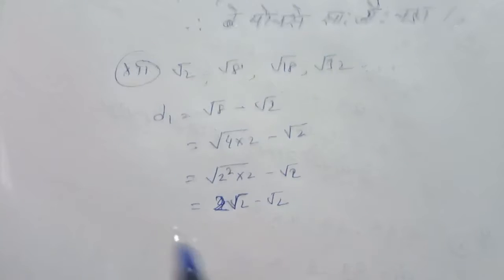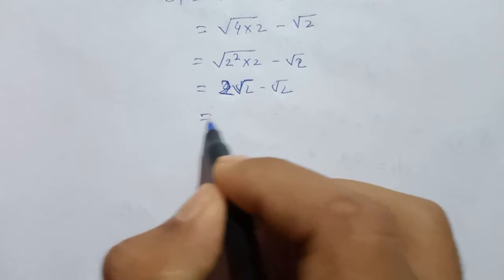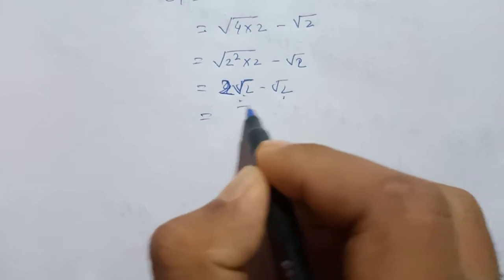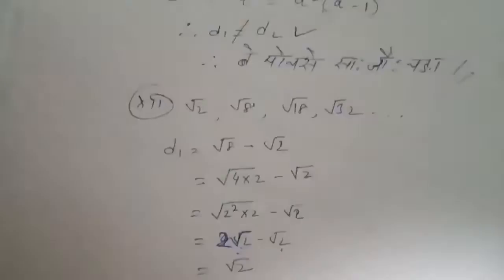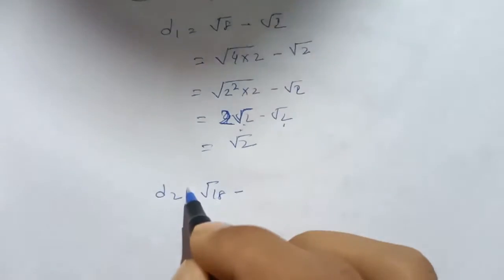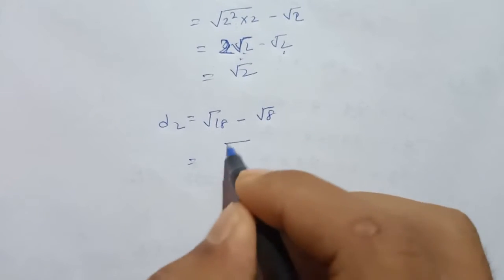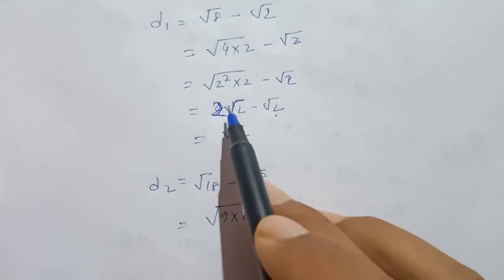D2 equals √18 minus √8. Now √18 equals 9 into 2, so √18 equals 3√2. And √8 equals 2√2. You can write D2 as 3√2 minus 2√2.